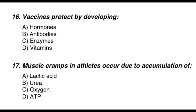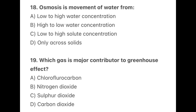Question 16: Vaccines protect by developing — the correct option is B — antibodies. Question 17: Muscle cramps in athletes occur due to accumulation of — the correct option is A — lactic acid. Question 18: Osmosis is the movement of water from — the correct option is B — high to low water concentration.